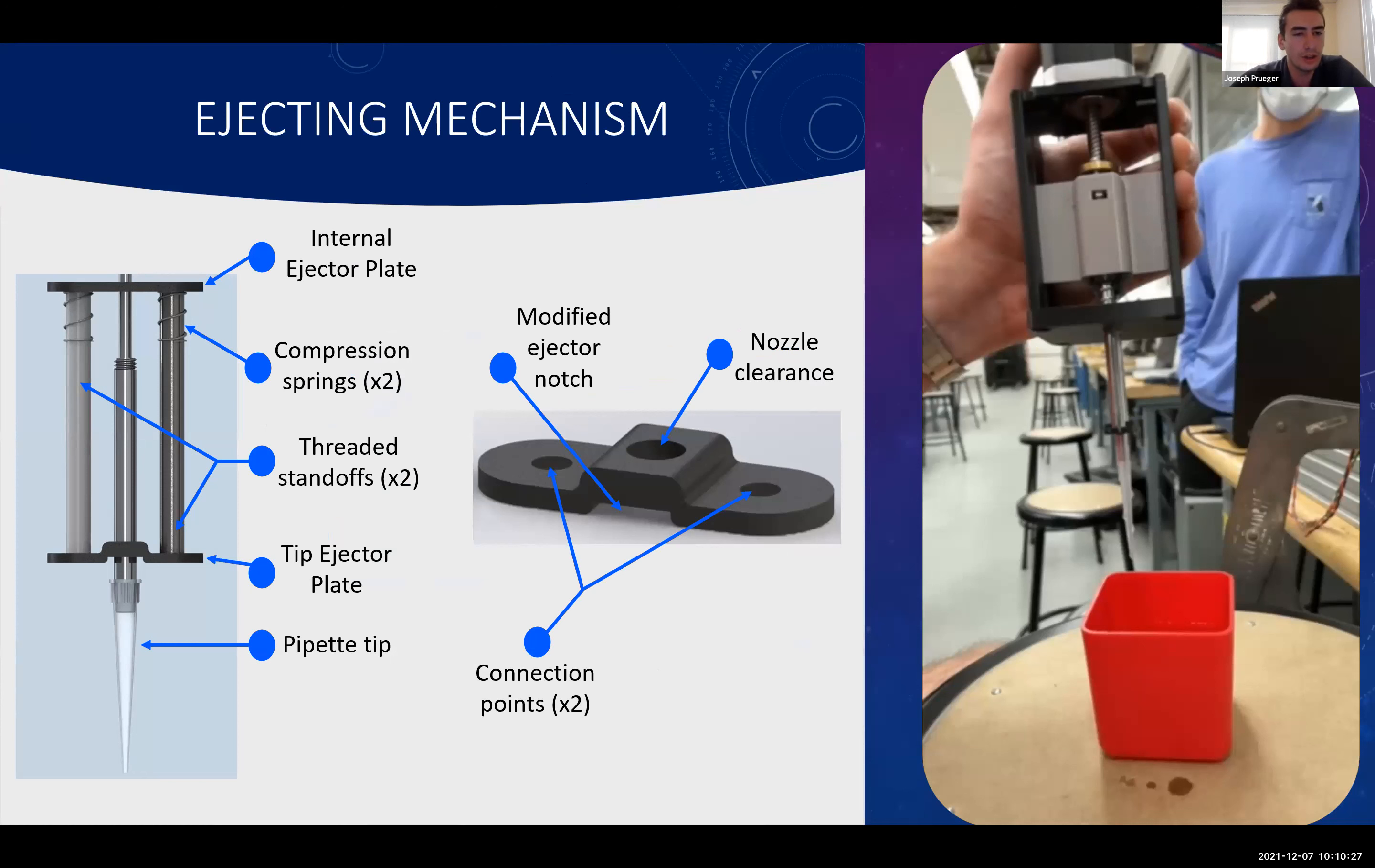Moving on from our liquid handling subsystem, we're going to look into our ejector mechanism. Starting on the left side of the screen at the top, we have our internal ejector plate. This internal ejector plate directly interfaces with the bottom of the spaceship. So when it's engaged, it'll compress our precision compression springs against the bottom of the motor mount. While running through tests, we had some trouble figuring out how to interface from the internal part of our design to the external part of the design to eject the tip. Our team decided on two threaded standoffs that create a more slender look to our design. Connecting to these threaded standoffs are the tip ejector plate, which can be seen in a close-up view on the right side. The cool part about this design is the center notch, and this allows us to dispense the maximum amount of fluid, which as Drew mentioned earlier was 200 microliters, without ejecting the tip until necessary.